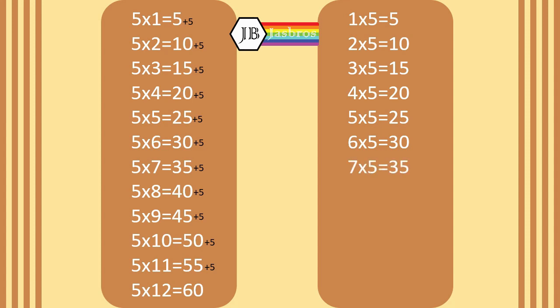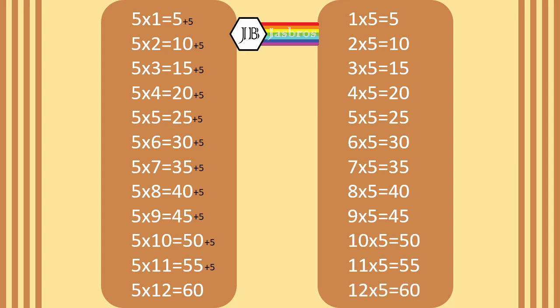Seven fives is thirty-five. Eight fives is forty. Nine fives is forty-five. Ten fives is fifty. Eleven fives is fifty-five. Twelve fives is sixty.